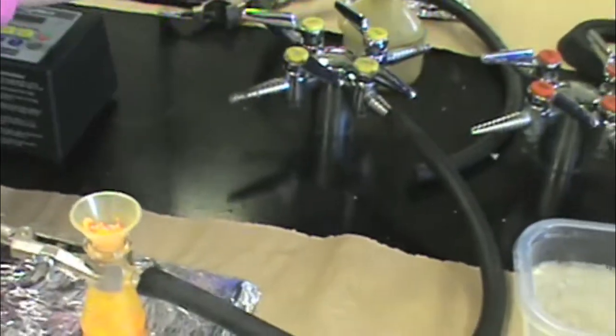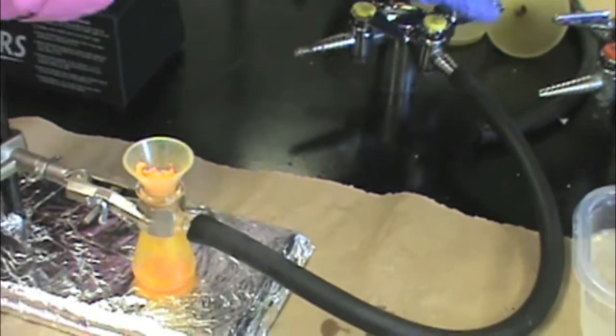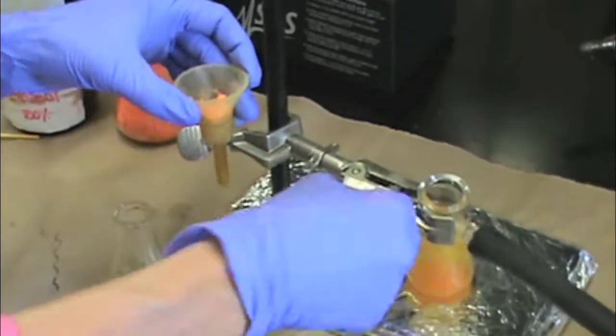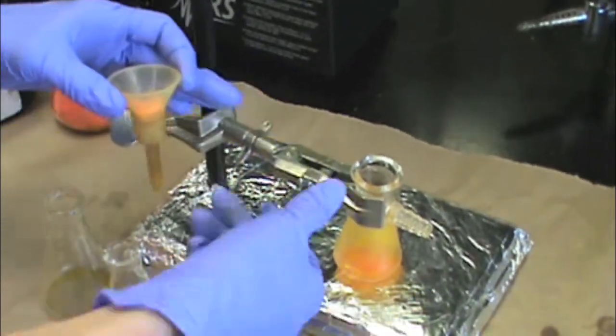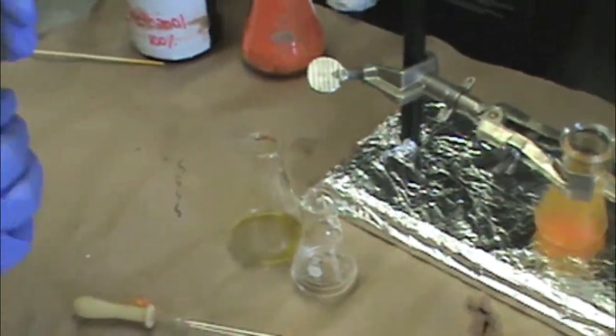Once you are finished filtering and your crystals look dry, you can turn the vacuum off, take your crystals out of the flask, remove the hose from the sidearm flask, and clean the sidearm flask using some acetone into the waste bottle.